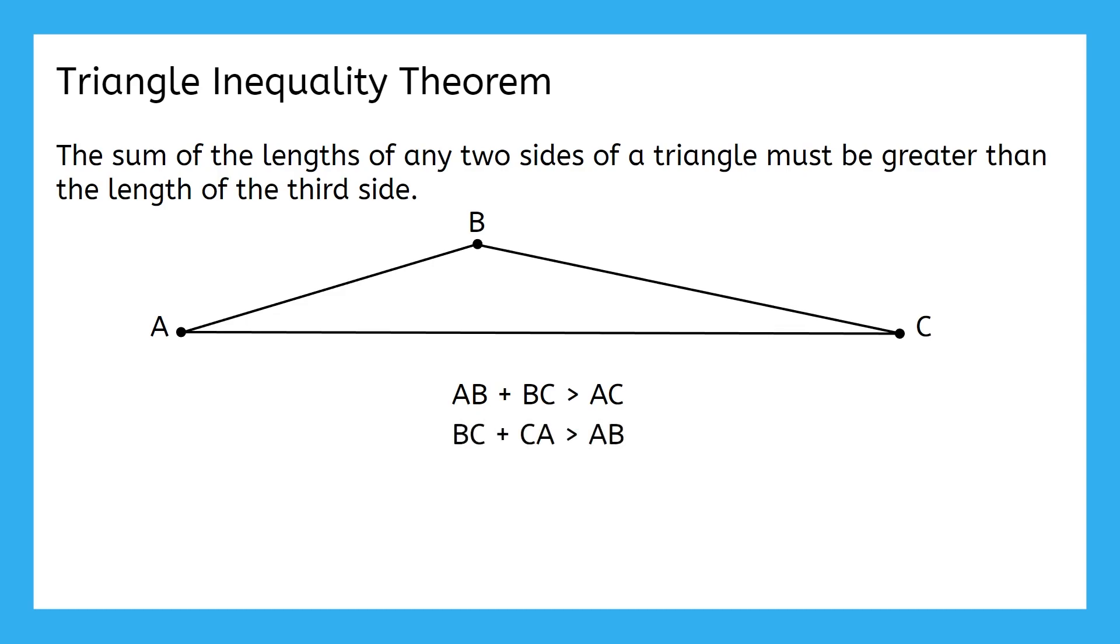Sides BC and CA have to add to be greater than AB, and sides CA and AB must add to be more than side BC. But let's shorten this a little by labeling the sides. Then our labels and our inequalities can be shortened too. This is the Triangle Inequality Theorem.